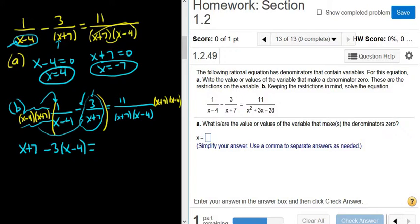It's equal to, and then all of this cancels. So we're left with 11. Now we just have to distribute and solve for x.